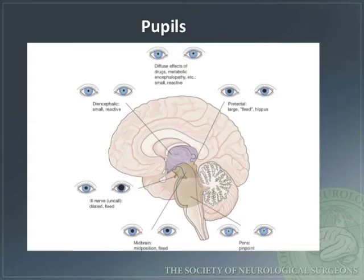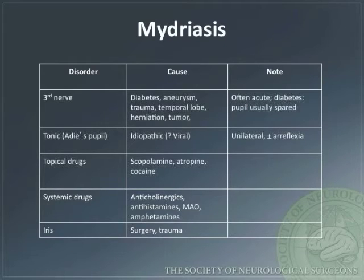Pupillary abnormalities can localize a lesion within the central nervous system. This diagram illustrates how to correlate pupillary findings with anatomic lesion location. Mydriasis, or pupillary dilatation, may be due to several conditions, which are summarized in a table by disorder.